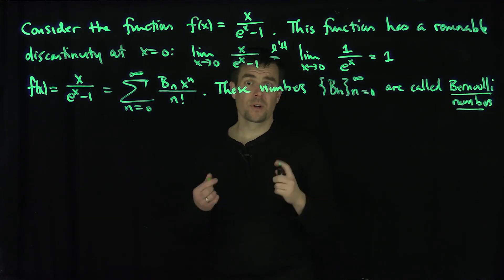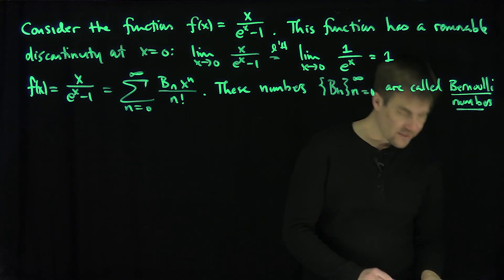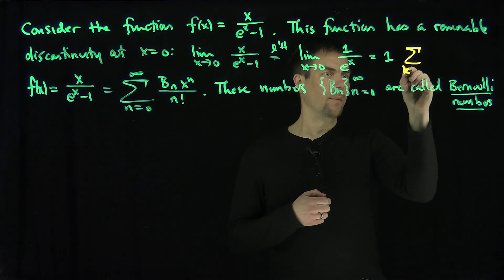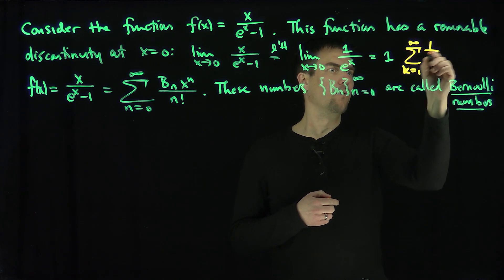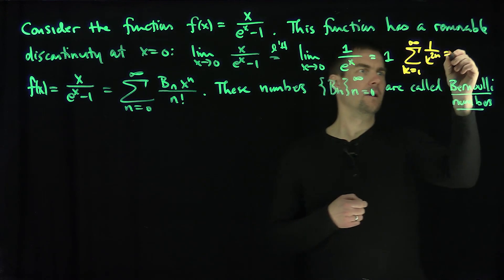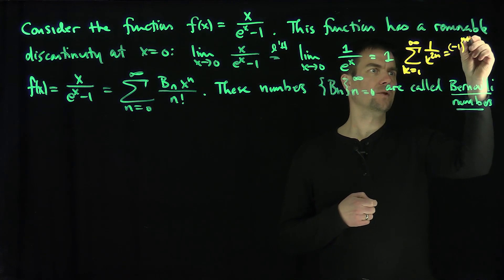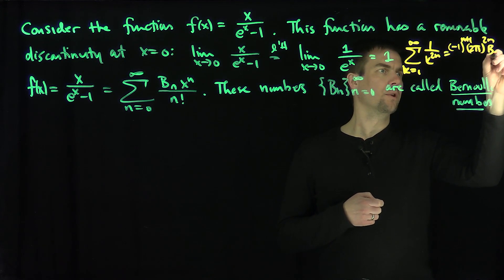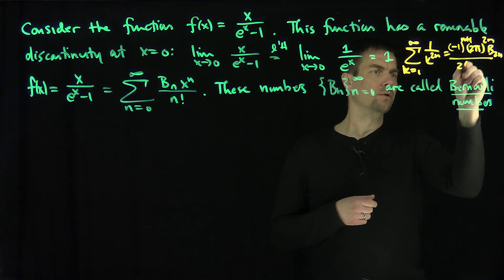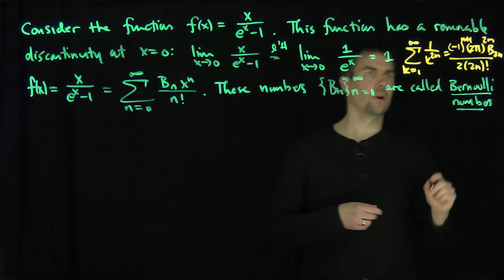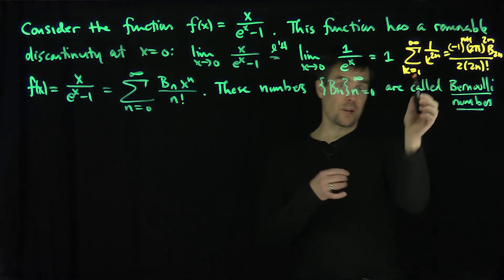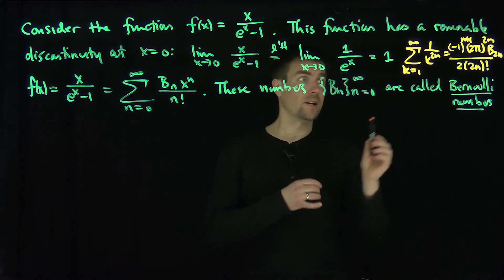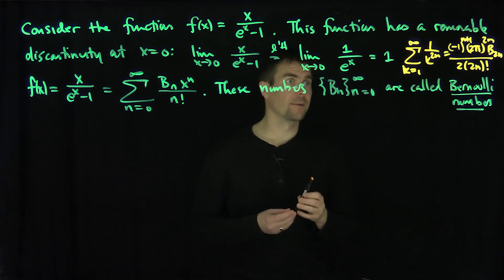The Bernoulli numbers come up in many applications. One famous application states that the sum as k goes from 1 to infinity of 1 over k to the 2n equals negative 1 to the n plus 1, times 2π to the 2n, times B_{2n}, over 2 times (2n) factorial. In other words, the Bernoulli numbers arise in the study of the Riemann zeta function at 2n — the Riemann zeta function and the Bernoulli numbers are intimately connected.